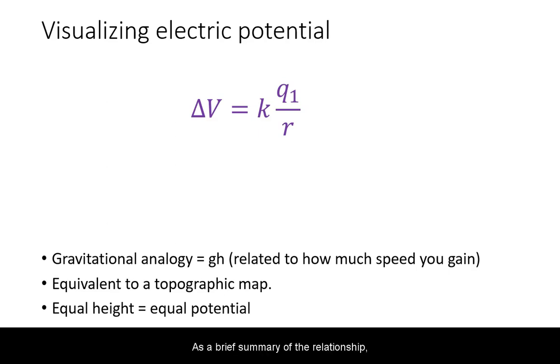As a brief summary of the relationship, in a gravitational field a topographic map can be used to predict changes in the speed of a test mass as it changes height in a gravitational field.